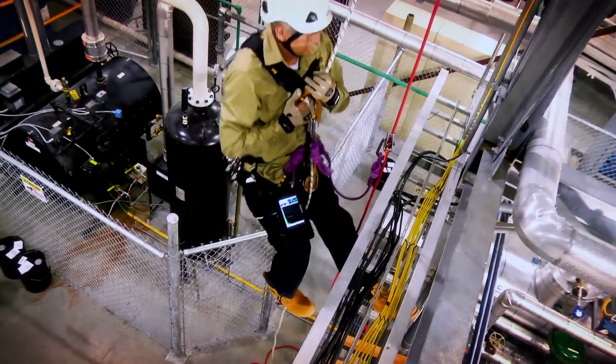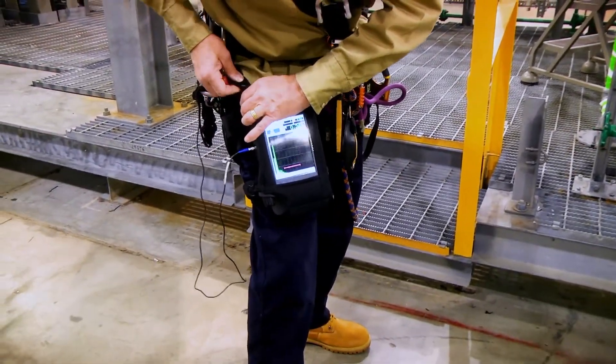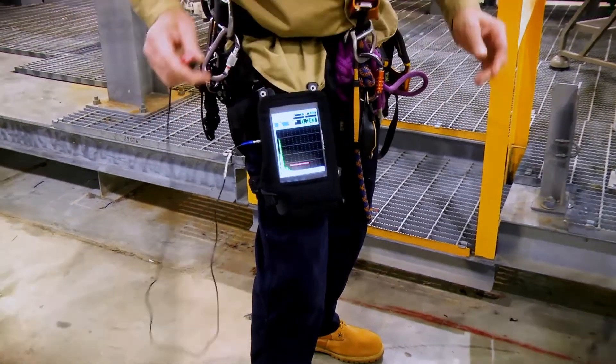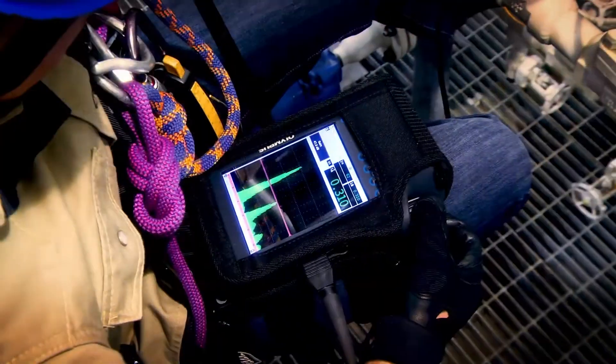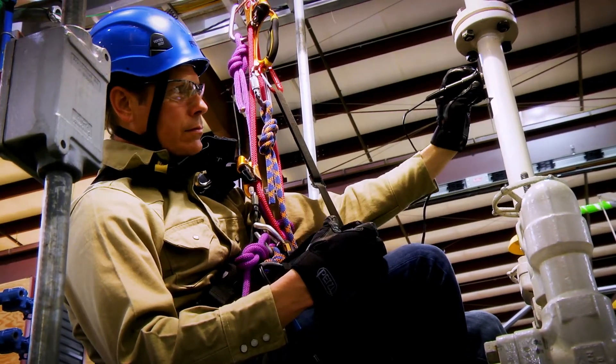For true rope access applications, the instrument can be strapped to your leg with the optional Rope Access Accessory Kit for hands-free operation. In this configuration, the knob and buttons can be accessed with either hand, keeping the instrument clearly in view even while hanging from a harness.